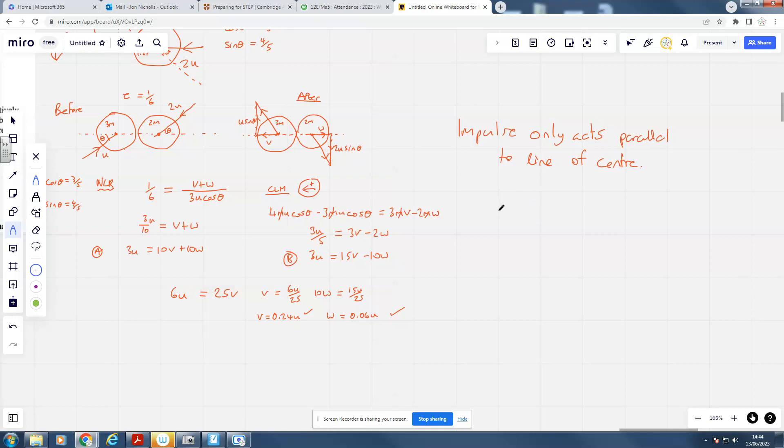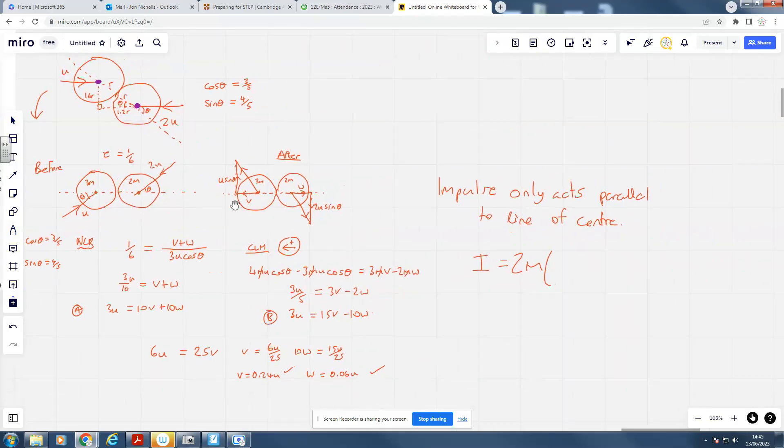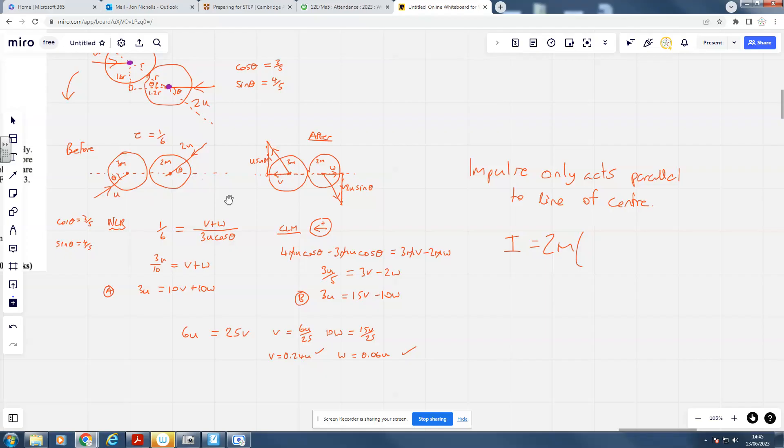So all we need to do to work out the impulse on B is do the mass, which is 2M, multiplied by, now, this is just going to be the differences in the initial velocity parallel to the center and the final. Now, what was the initial parallel to the line of center on B? It was 2U cos theta. But be slightly careful here. With W, we're going to have to actually, we're not going to take away 0.06U. Well, if you like, we're taking away minus 0.06U. And that's just because this is going in the opposite direction to that one, isn't it? And so if we're finding the change in momentum, well, the momentum was going this way. Momentum's going that way. That's what a situation where we're going to actually add them. I hope that makes sense. So I'm going to have 0 point, what is that? That was 0.06. So that's going to be 1.2U plus 0.06U. That's 1.26U times by 2. We're going to have 2.52MU. And the question's finished.